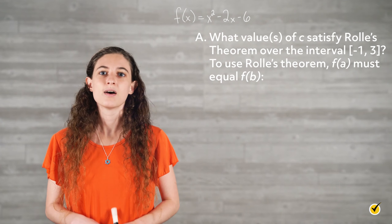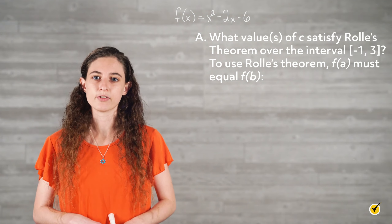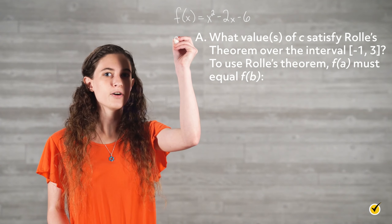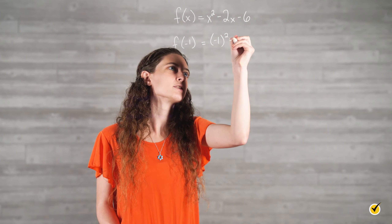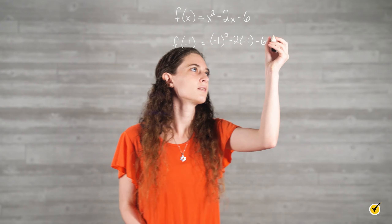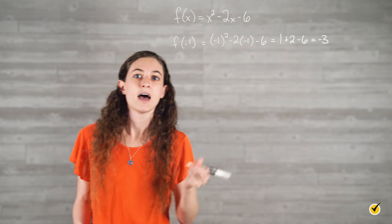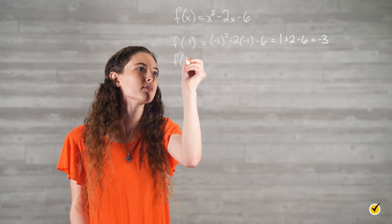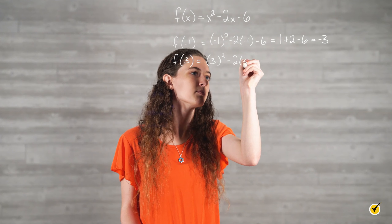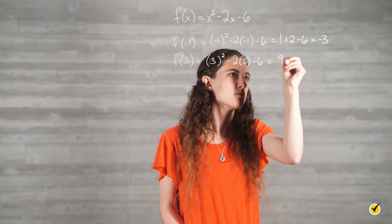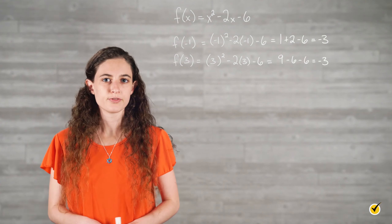Part A: What values of c satisfy Rolle's theorem over the closed interval negative 1 to 3? To use Rolle's theorem, f of a must equal f of b. So we'll take f of negative 1: negative 1 squared minus 2 times negative 1 minus 6 equals 1 plus 2 minus 6, which equals negative 3. And f of 3 equals 3 squared minus 2 times 3 minus 6, which equals 9 minus 6 minus 6, which equals negative 3. Since f(−1) equals f(3), there must be a point c where the derivative equals 0.